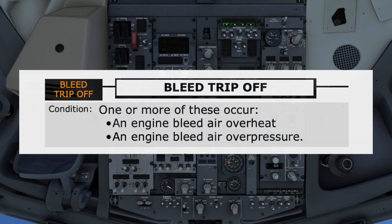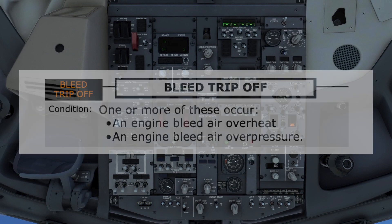Both pilots must agree it's the correct checklist before performing it. In this case, the checklist condition is for an engine bleed air overheat or overpressure. The procedure not only has the wording from the illuminated light, it also shows an image of the light, which matches the illuminated light on the panel.